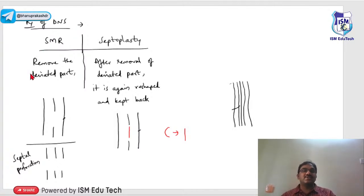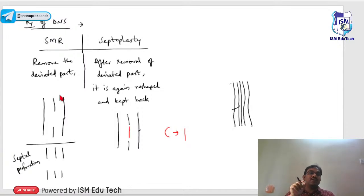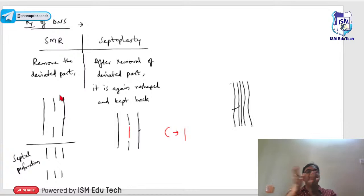Two surgical treatments exist for deviated nasal septum: submucous resection (SMR) and septoplasty. In SMR, the deviated part is removed — the mucosal layers on both sides are opened, the deviated cartilage/bone is removed, and the flaps are closed. In septoplasty, the removed deviated part is straightened and placed back into the septum.